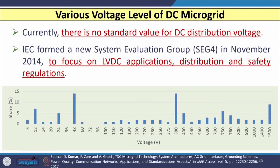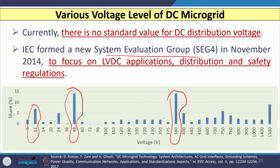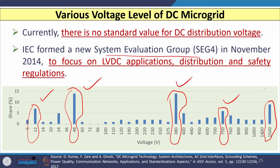There is no standard value for DC distribution voltage levels. However, IEC formed a new system evaluation group SCG4 in November 2014 to focus on LVDC applications, distribution, and safety regulations. Common voltage levels used for DC microgrids include 12 V (above 5%), 48 V (close to 15%), 750 V (above 5%), and 1500 V (close to 10%).